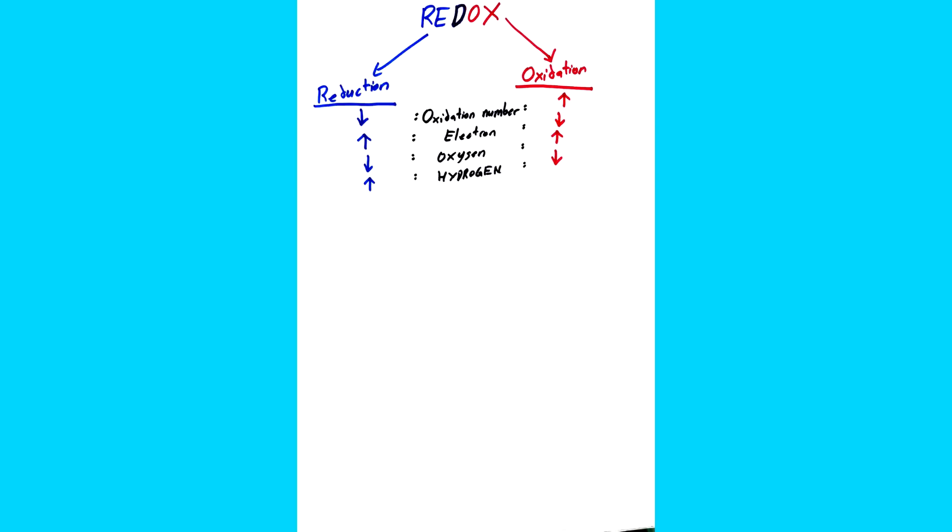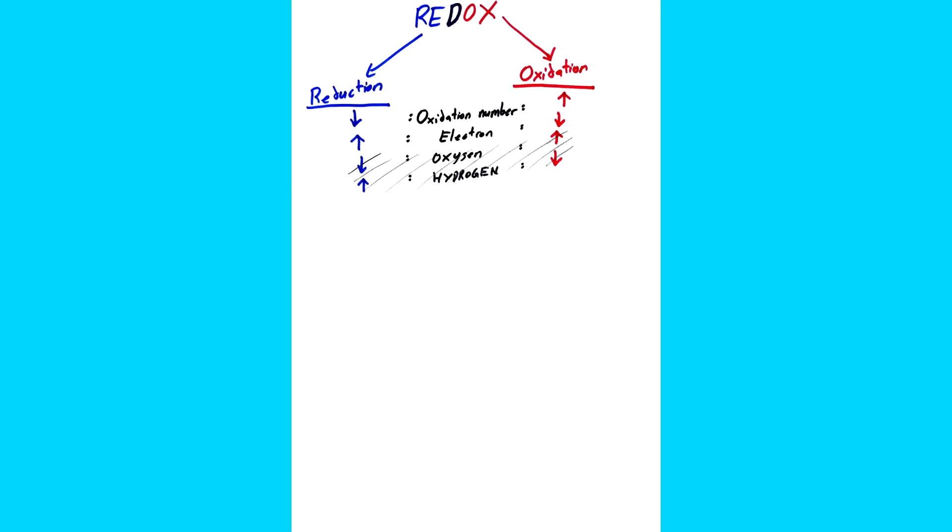One important thing that you need to know is that the most accurate way to know if a substance is undergoing reduction or oxidation is through the change of oxidation number and the number of electrons. Number of oxygen and hydrogen is not that accurate, so it's better to prevent using that.